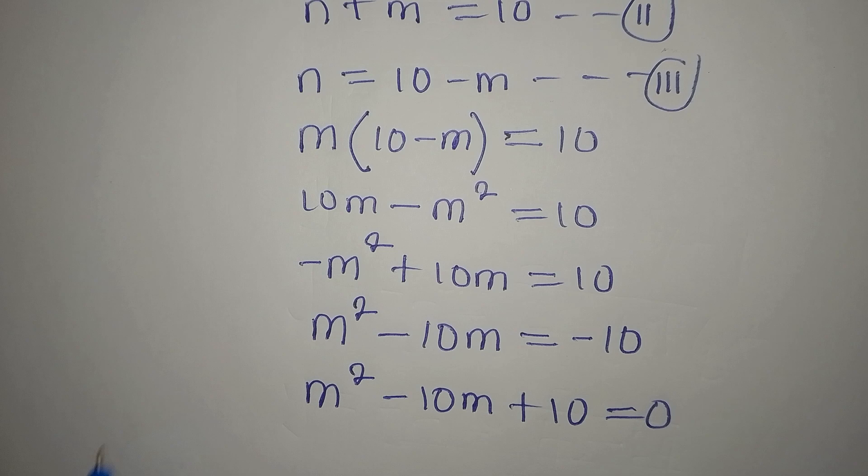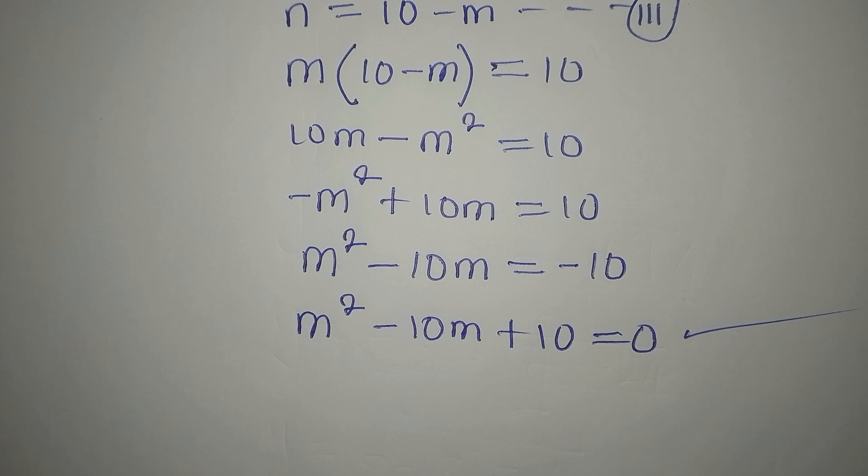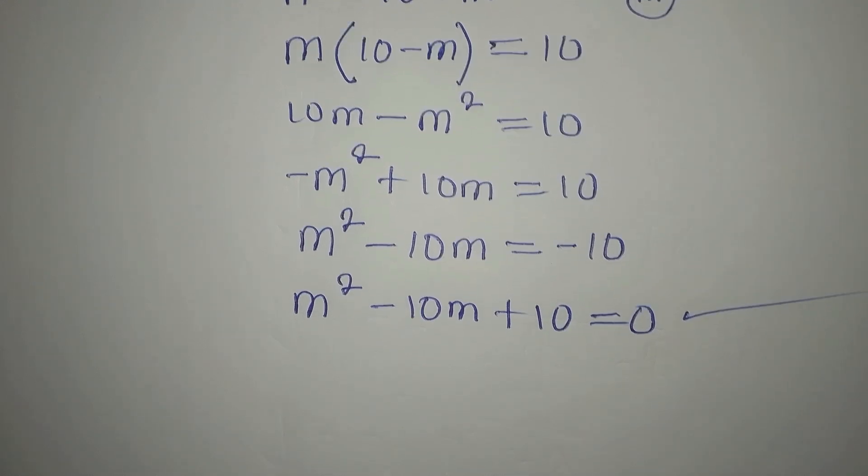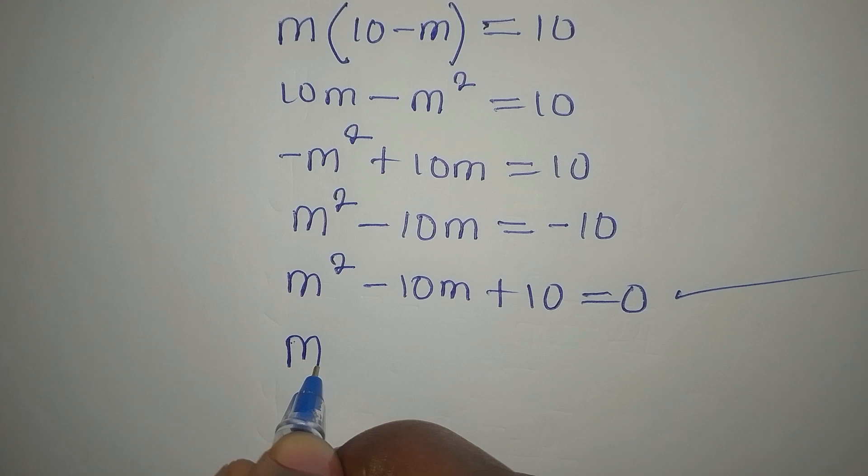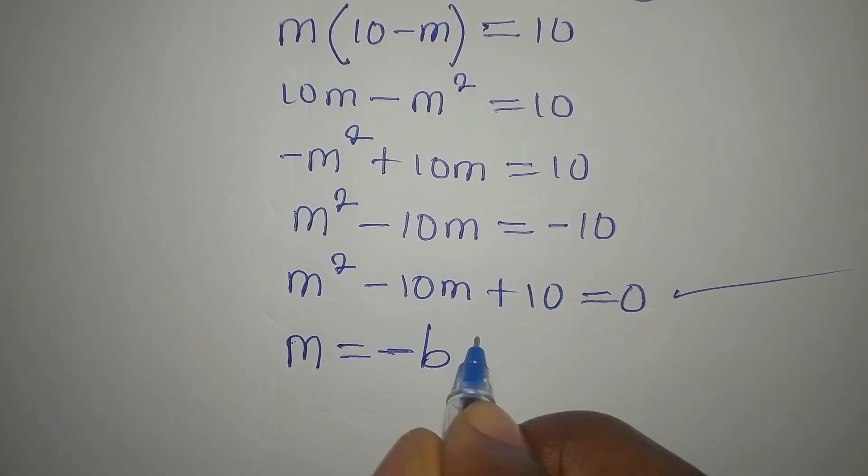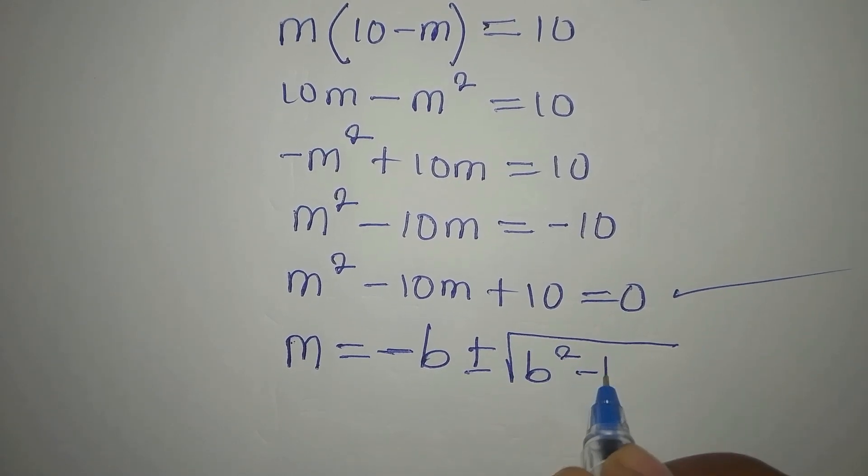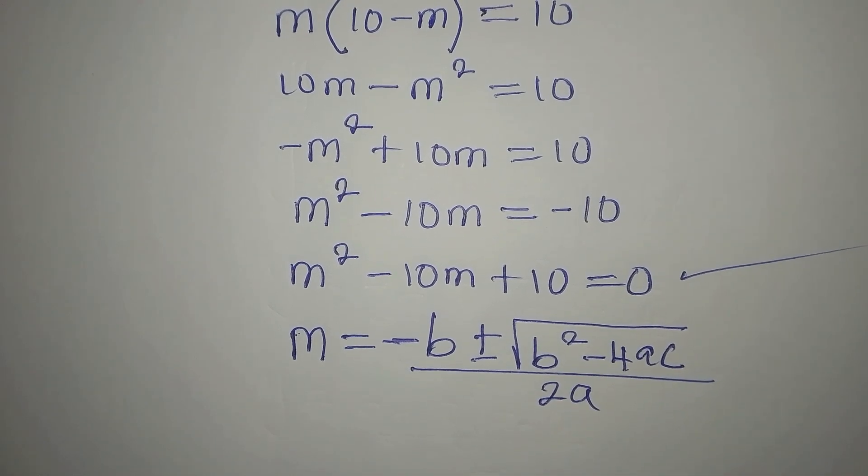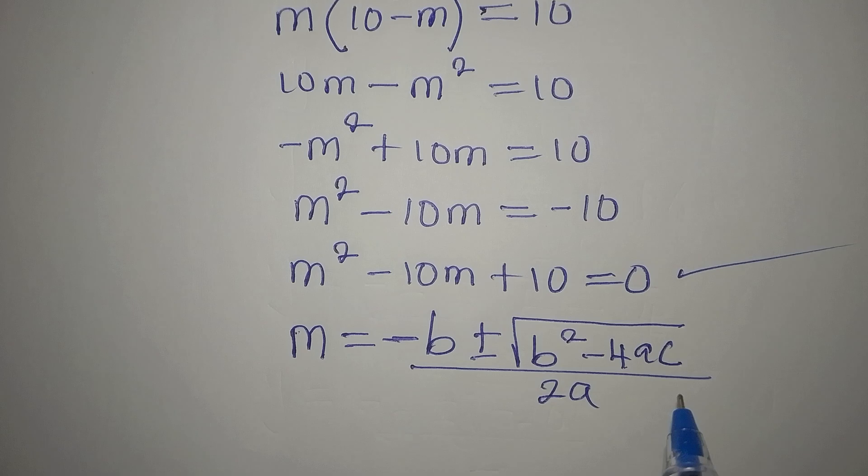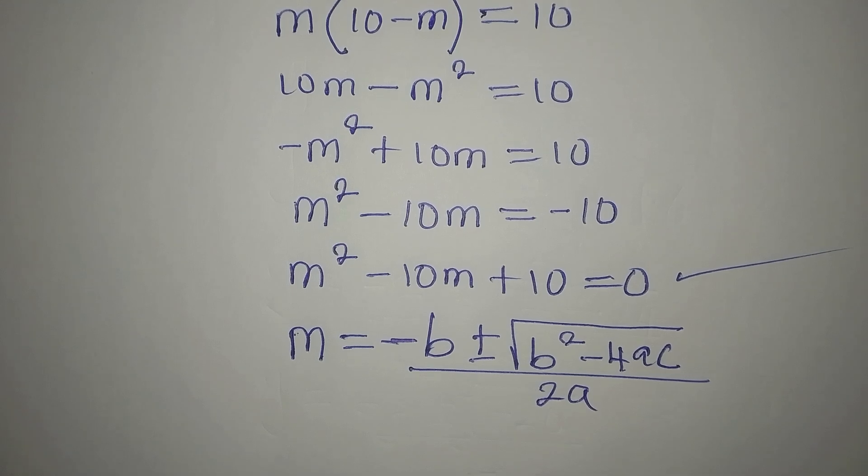So the question now is, what kind of an equation is this? This is a quadratic equation. Now, let's bring out our quadratic general formula. So now, m here is equal to minus b plus or minus square root of b squared minus 4ac all over 2 times a. This is quadratic general formula because it can be used to solve all quadratic equations.